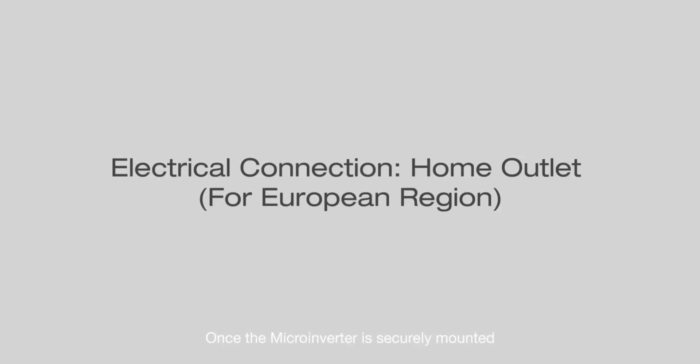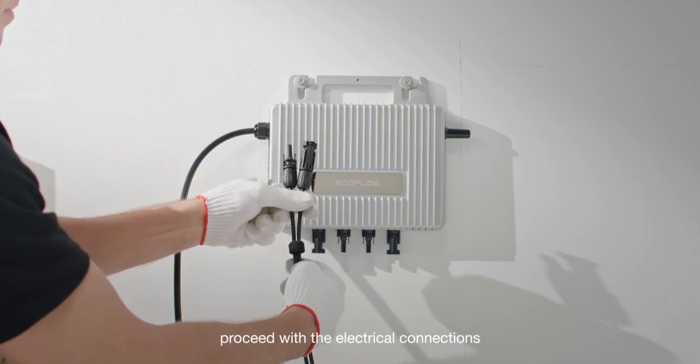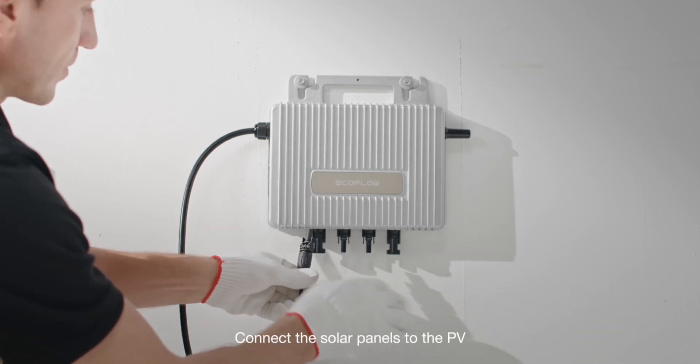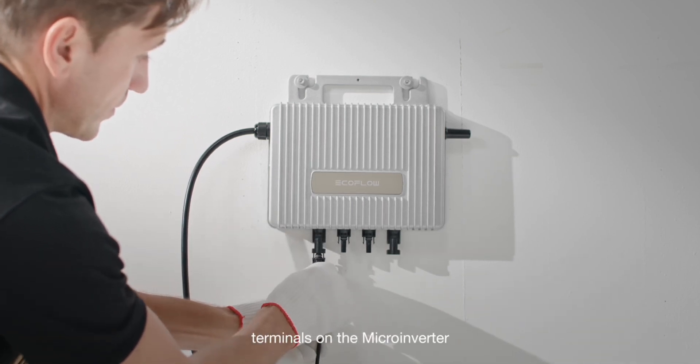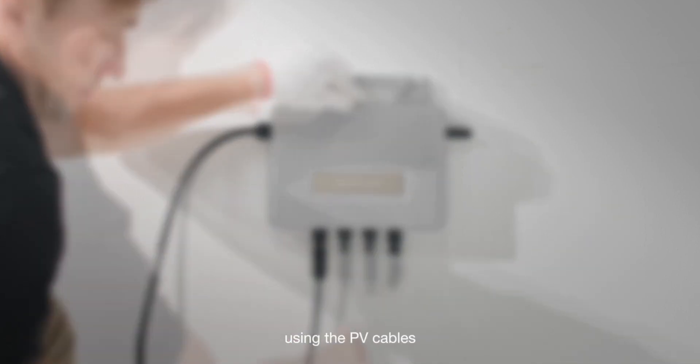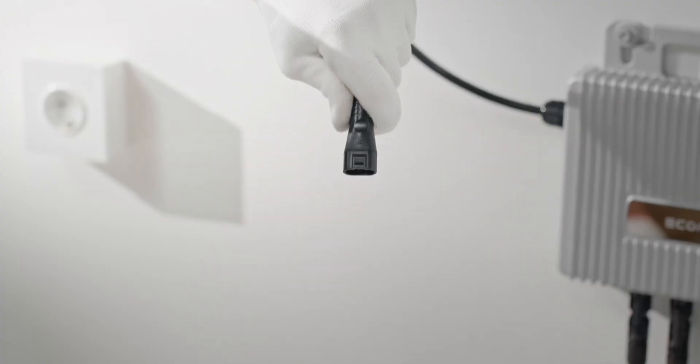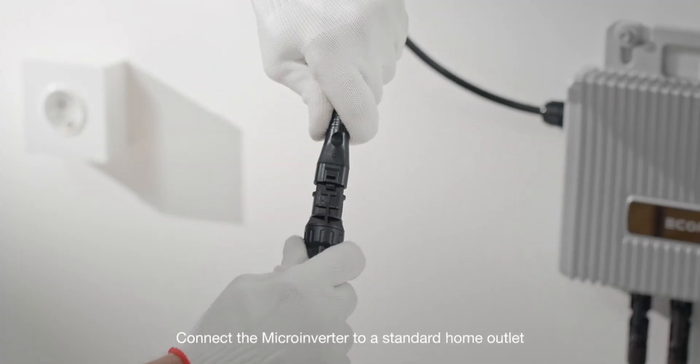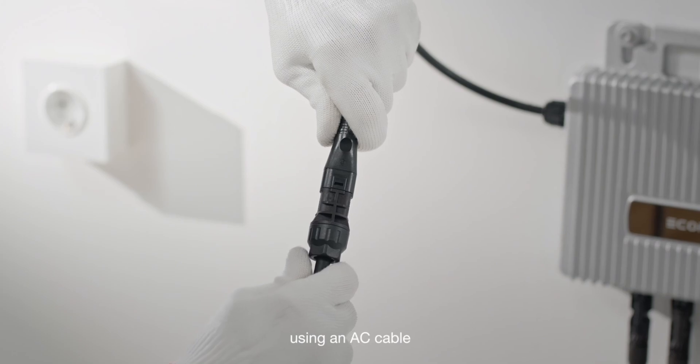Once the microinverter is securely mounted, proceed with the electrical connections. Connect the solar panels to the PV terminals on the microinverter using the EcoFlow MC4 PV cables. Connect the microinverter to a standard home outlet using an AC cable.